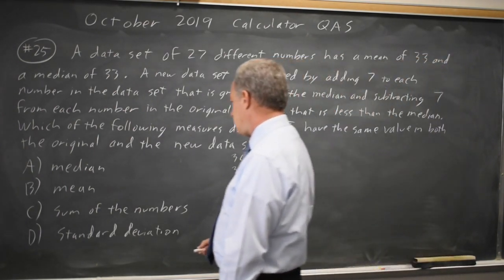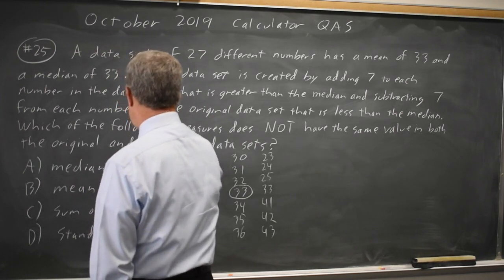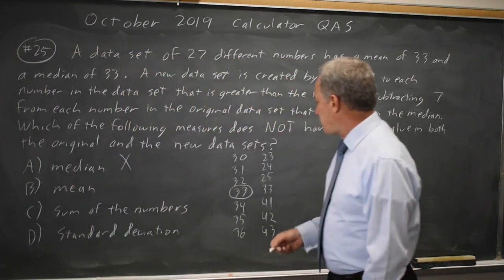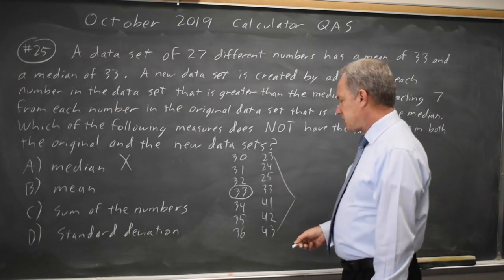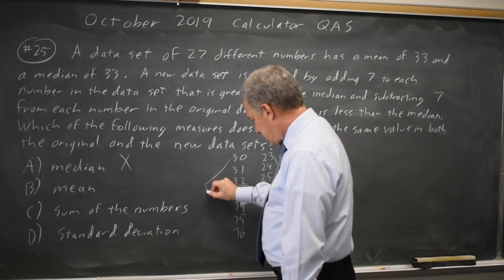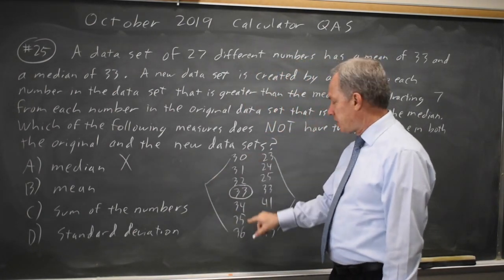And if you look at this, the median is still the same. They're asking which does not have the same value. The mean, if you add them up since 23 plus 43 is 66, 30 plus 33 is also 66.